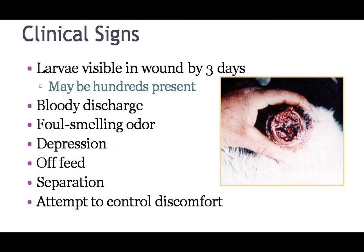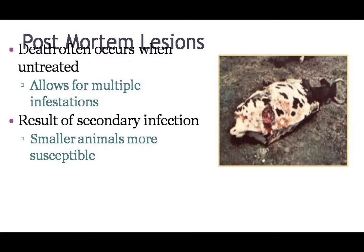Occasionally the wound may not be obvious, but there will be a small opening in the skin with pockets of larvae beneath. The infected animal usually exhibits signs of depression, goes off feed, and separates itself from the herd. The animal often rubs against trees, licks the wounds, and stands in water in an attempt to relieve discomfort. Death can occur in untreated infestations. Lack of treatment attracts other females and results in multiple infestations. Lesions may extend into the body cavities and lead to associated pleuritis, sinusitis, or peritonitis. Death is usually the result of secondary infections and toxicity. Smaller animals are more susceptible to the effects of infestation.